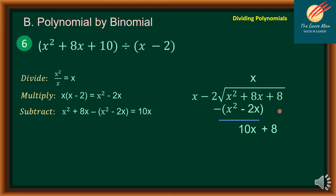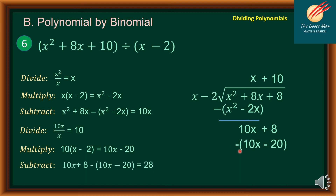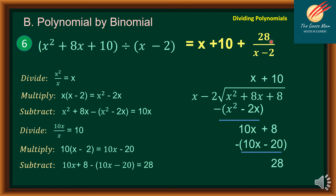Since I bring down the next term, I'll repeat the steps of divide, multiply, and subtract. That is 10x divided by x, which gives 10, written just above 8. Then 10 times x minus 2 gives 10x minus 20. Subtracting: 10x minus 10x is 0, and 8 minus negative 20 results to 28. Note that 28 is our remainder. Therefore, the quotient of x squared plus 8x plus 10 divided by x minus 2 is equal to x plus 10 plus 28 over x minus 2.